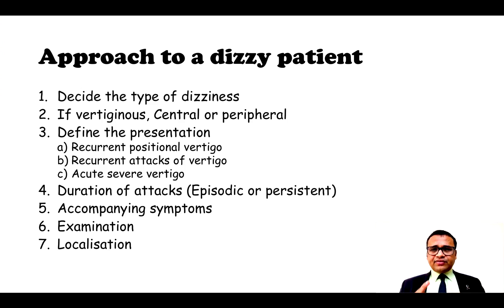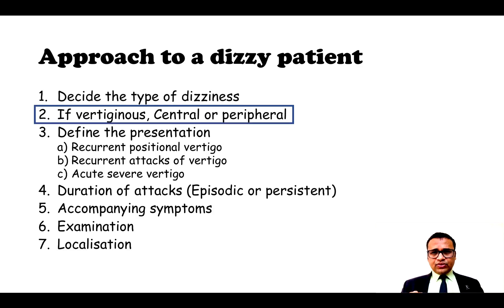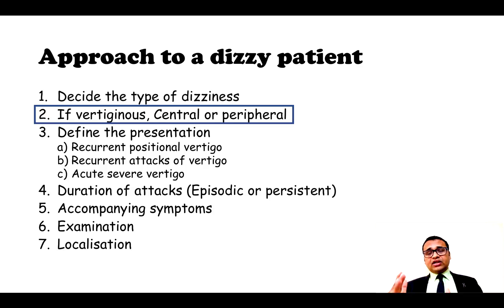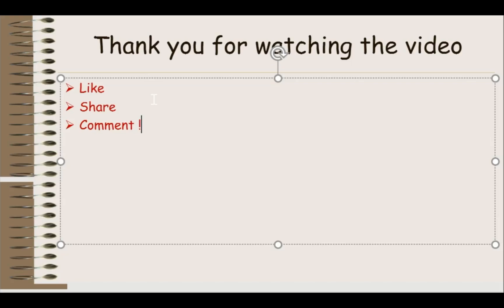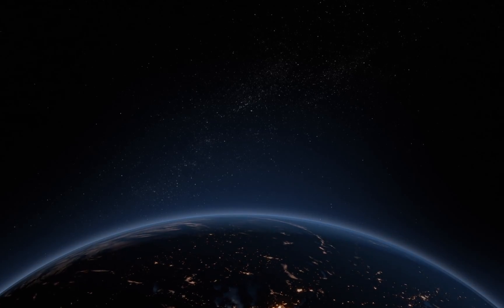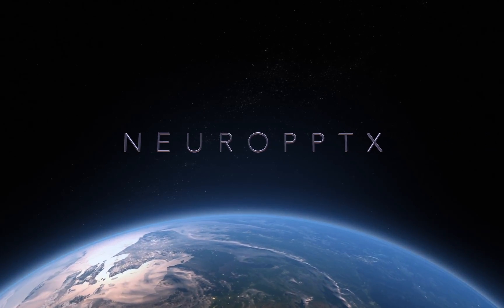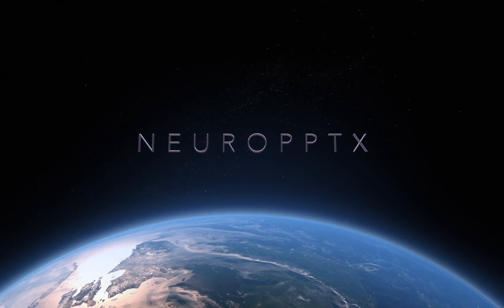So this was the first step in the approach — deciding the type of dizziness. In my next video, I will talk on how to decide, from the history, whether a vertiginous type of dizziness is central or peripheral. Thank you for watching this video.